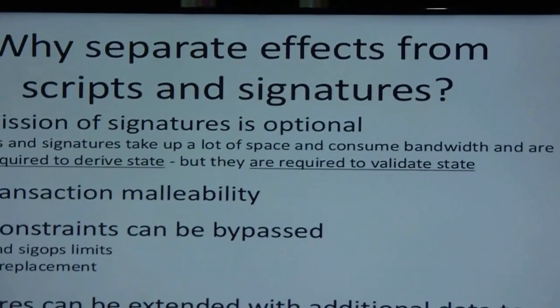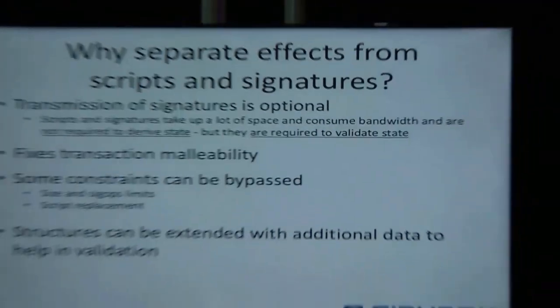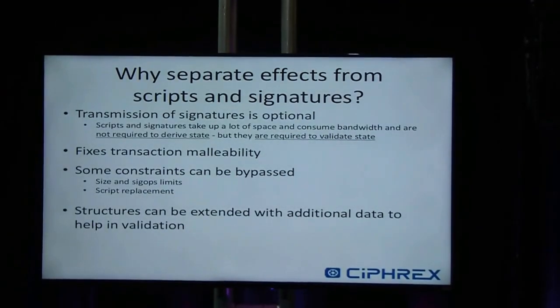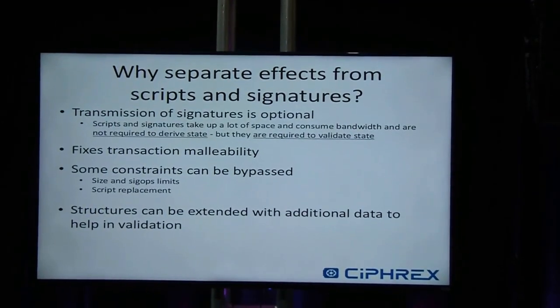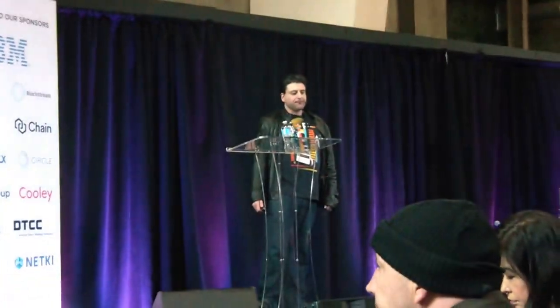It's not a Turing-complete thing — there are only certain kinds of contracts where you can really use this. But it's very likely that a lot of these use cases are actually very practical. You can have UTXO commitments in blocks that you can add, which make it possible to make validation cheaper.